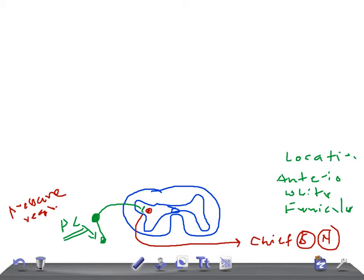The anterior spinothalamic tract contains crossed fibers, just as we saw in the lateral spinothalamic tract. After taking their origin, these fibers cross obliquely in the anterior white commissure and enter the anterior white column of the opposite side. A few fibers of this tract first ascend in the posterior gray horn for two or three segments on the same side, and then cross over to the anterior white column of the opposite side.